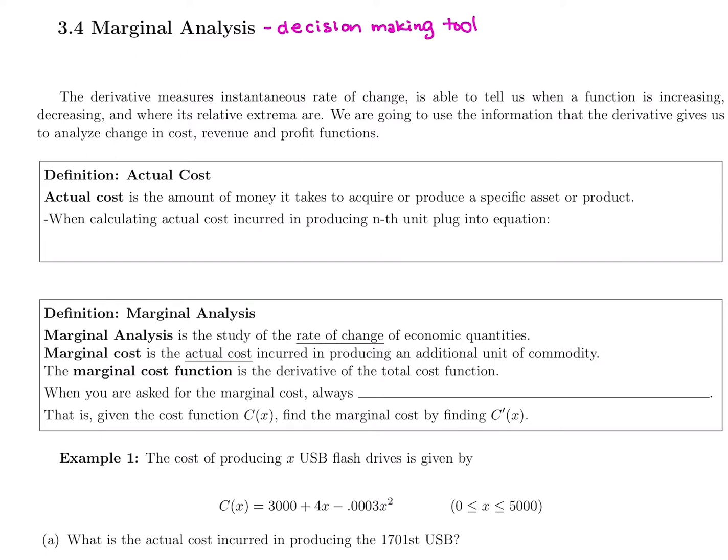With this, we're going to get some formulas. Hopefully a lot of these are familiar because they come from business and economics. Our first thing is actual cost. Actual cost is the amount of money it takes to acquire or produce a specific asset or product.